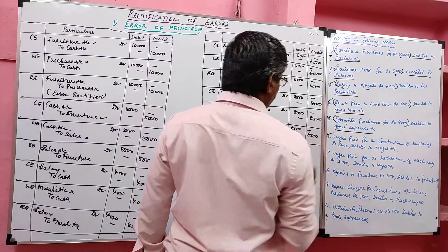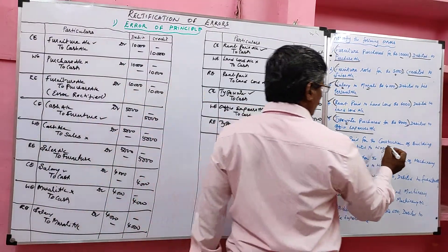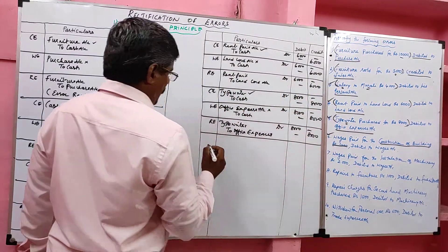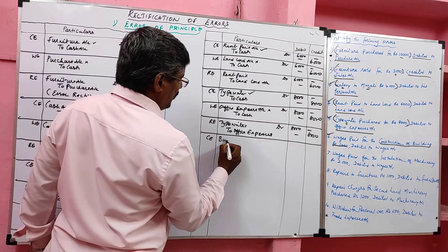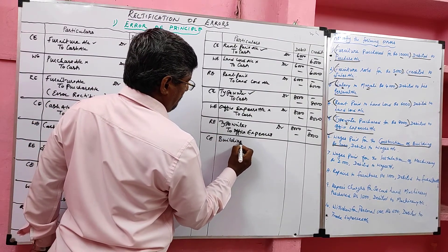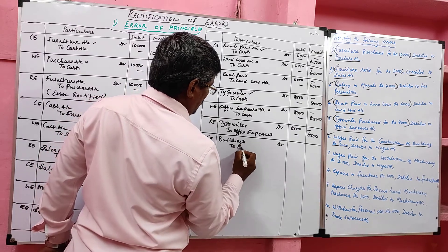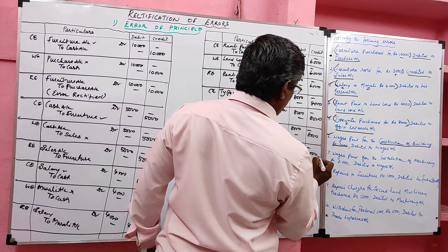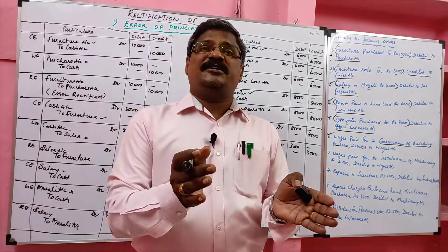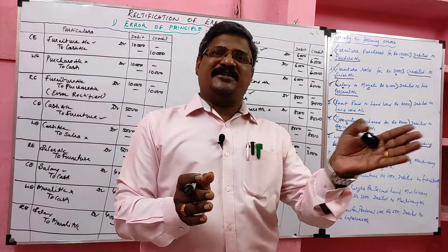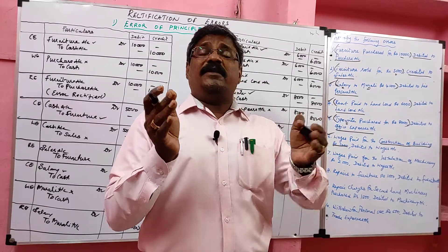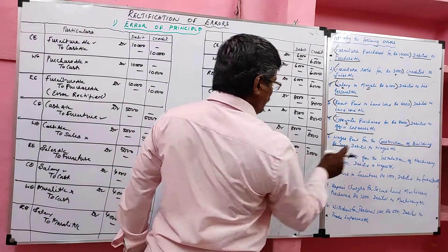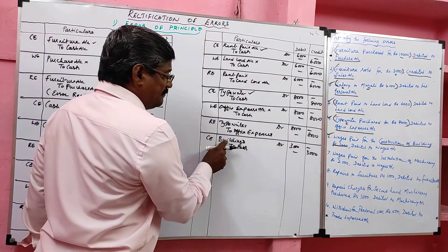Problem 6: Wages paid for the construction of building, rupees 3,000. Correct entry: building account debit to cash, 3,000. We should not write wages here because wages paid for construction of building should be debited to building account, not wages account. Wrong entry: they debited wages account. Wrong entry: wages account debit to cash, 3,000.